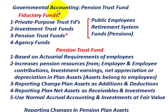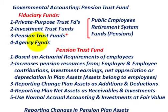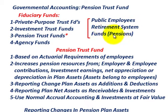What we're going to be going over here is governmental accounting for the pension trust fund, just the basics. When we're talking about a pension trust fund, it's part of the fiduciary funds under governmental accounting, and those would include the private purpose trust, the investment trust funds, and the pension trust funds. Also included are the agency funds. The pension trust fund is really the public employees' retirement system — the funds they have for their pensions under the retirement system.